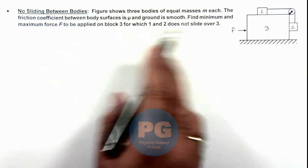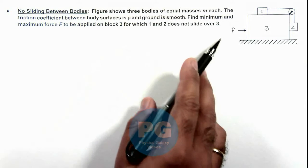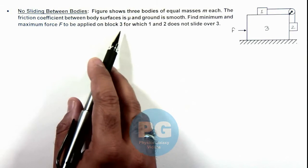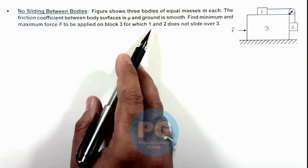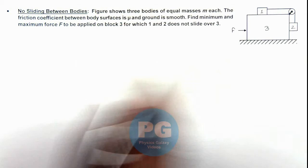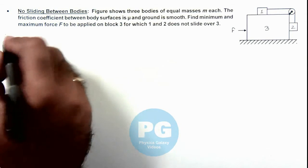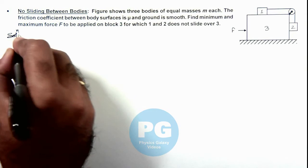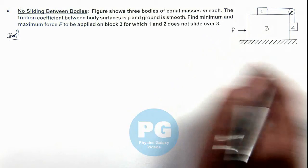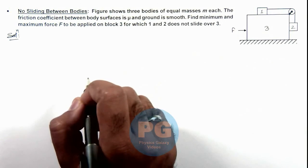We are required to find the minimum and maximum force F to be applied on block 3 for which blocks 1 and 2 do not slide over 3. In this situation, since 1 and 2 are not sliding on 3, all 3 blocks will move together as one.